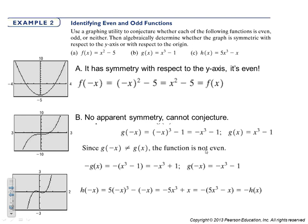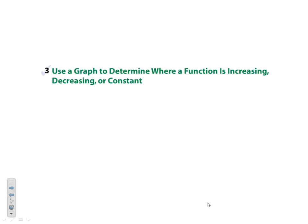For 5x cubed minus x, the graph looks like it has symmetry with the origin, suggesting it's an odd function. We put in negative x to test for even and get negative 5x cubed plus x, which is not equal to the original — confirming it's not even. But that result is exactly the opposite of our original function, which proves that it's odd.